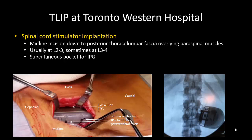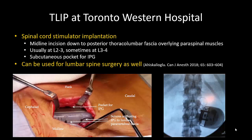At Toronto Western Hospital, the primary indication for the TLIP block is as part of the anesthetic technique, together with conscious sedation, for permanent implantation of spinal cord stimulators by our chronic pain colleagues. It may also be used for perioperative analgesia in lumbar spine surgery.